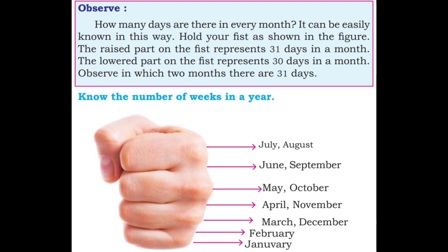Observe in which two months there are 31 days. Hold your left hand or right hand as a fist. Count the months: January, February, March, April, May, June, July, then August, September, October, November, December. The upper part of the knuckle means 31 days and the lower part means 30 days — easy to count.